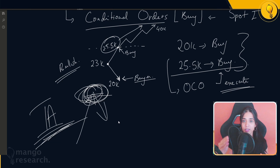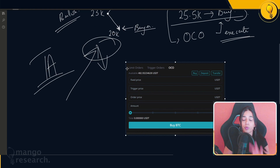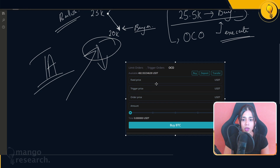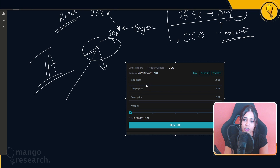With conditional bids covered, let's get into the OCO order card. I'm going to pull it up right here and first break down these fields for you before we execute the bid on the Bitget exchange, so you can see it in action. The fixed price field is going to be that pullback price.